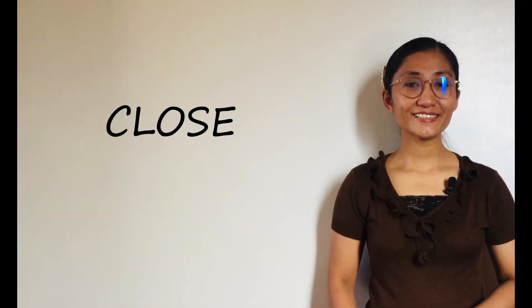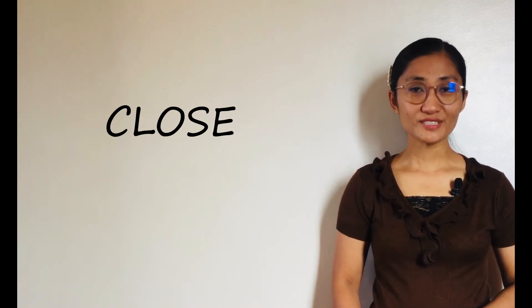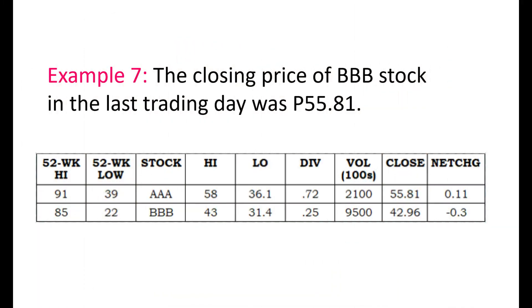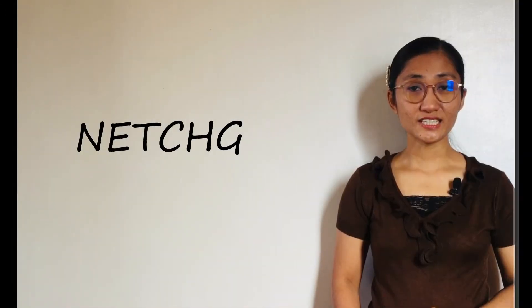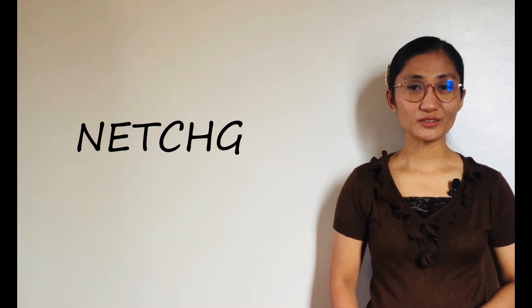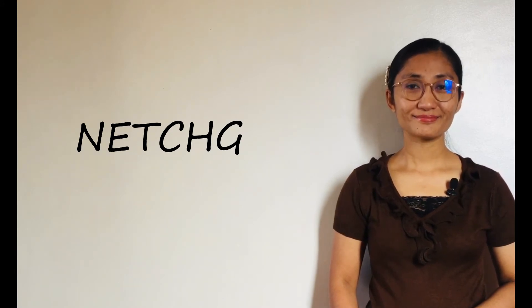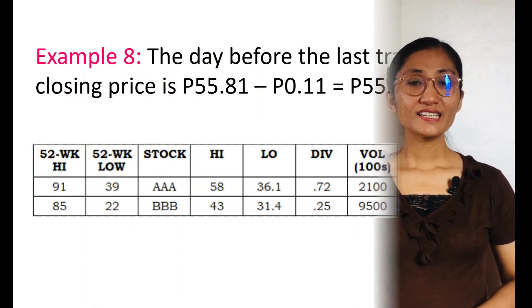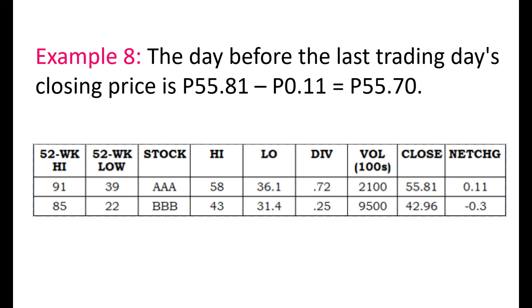Close is the last trading day's closing price. Example 7: The closing price of AAA stock in the last trading day was 55 pesos and 81 centavos. Net CHG, or net change, is the difference between the two most recent trading days. The net change in the case of AAA stock is 0.11. Example 8: The day before the last trading day's closing price is 55 pesos and 81 centavos minus 11 centavos, which equals 55 pesos and 70 centavos.